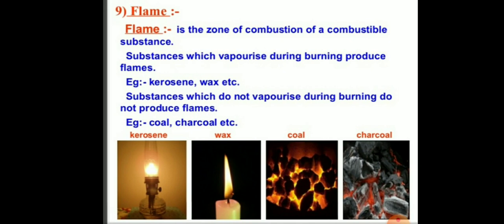A flame is the zone of combustion of combustible substances. Substances which vaporize during burning produce a flame — for example, kerosene and wax. Substances which do not vaporize during burning do not produce a flame — for example, coal and charcoal. The flame is the region where combustion of gaseous material takes place, producing heat and light.